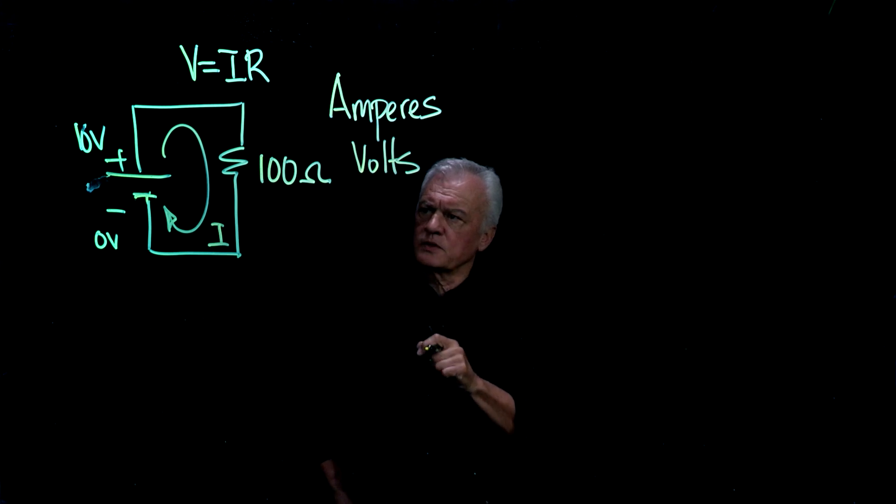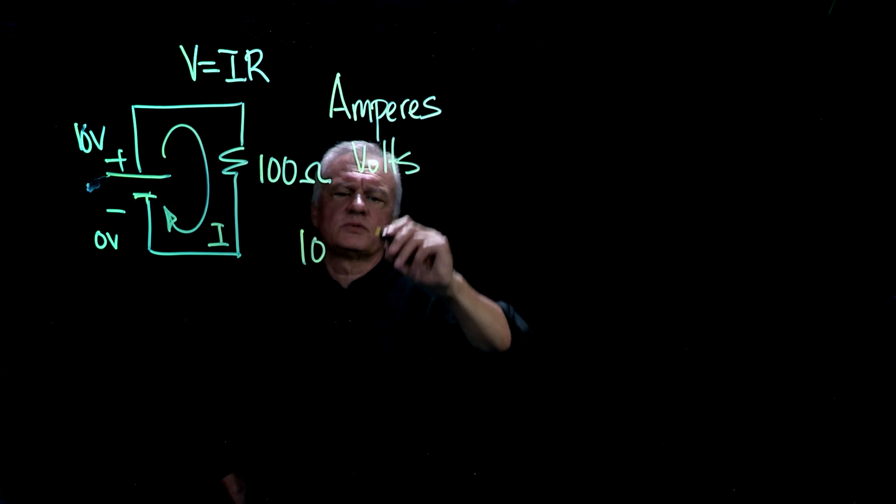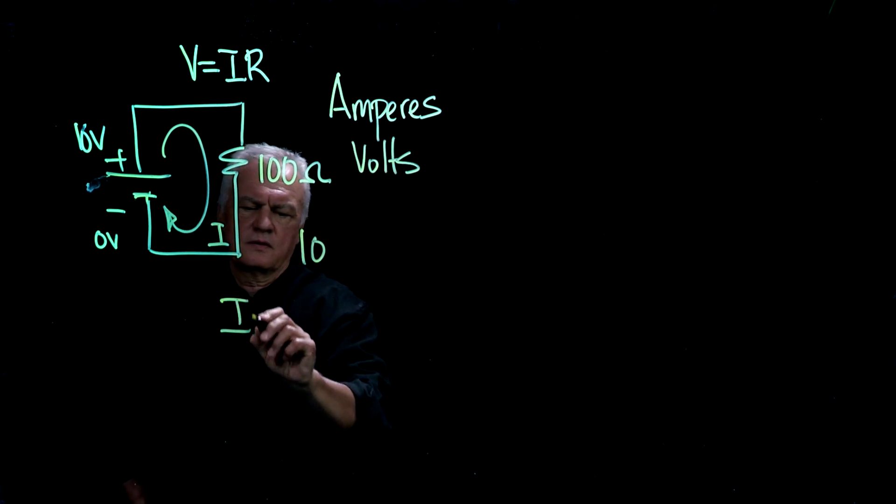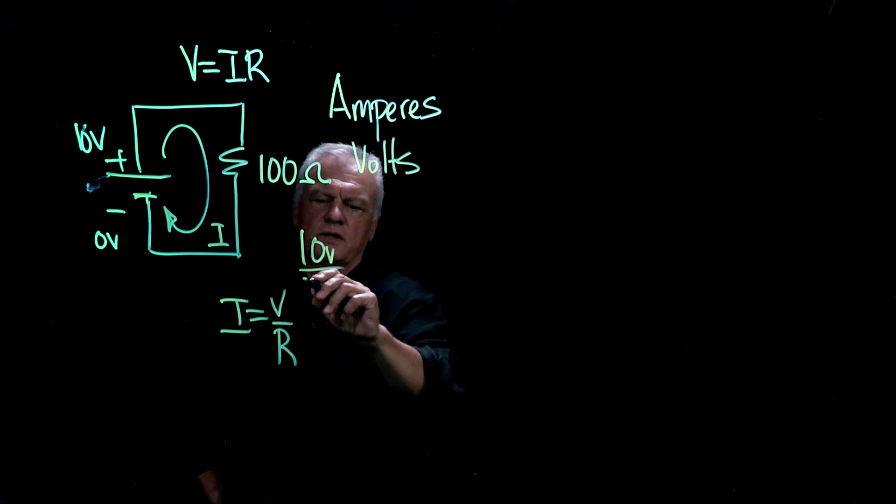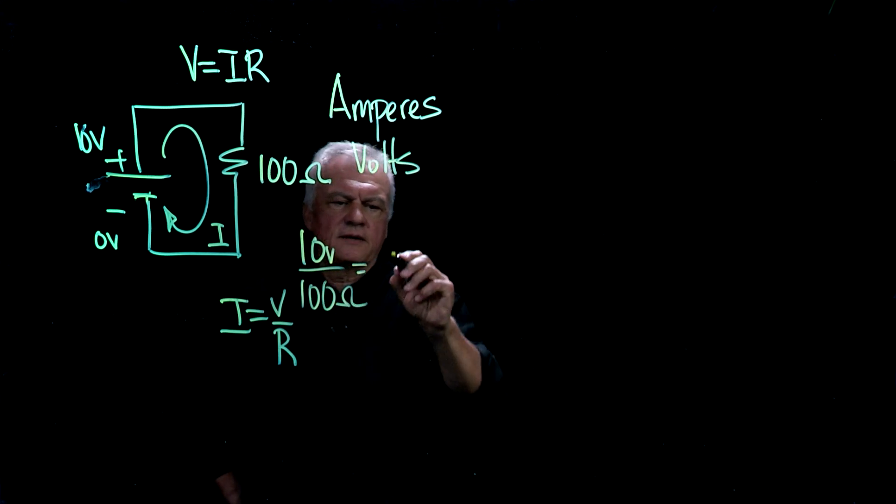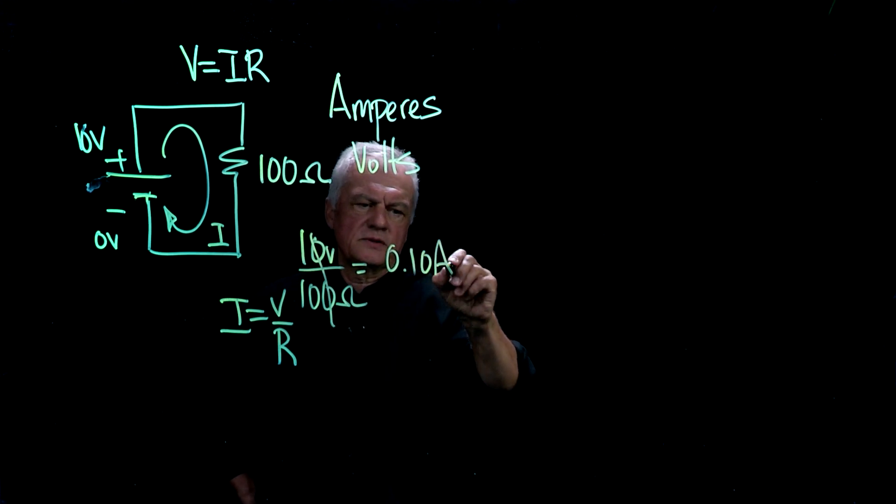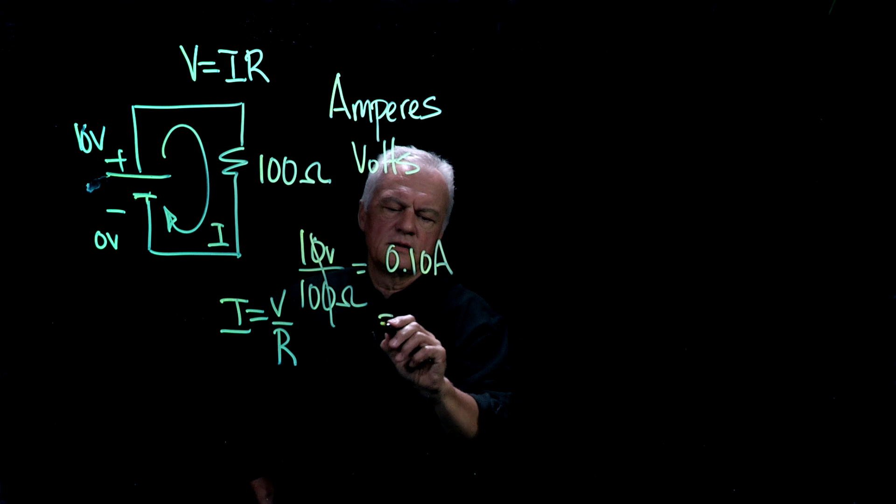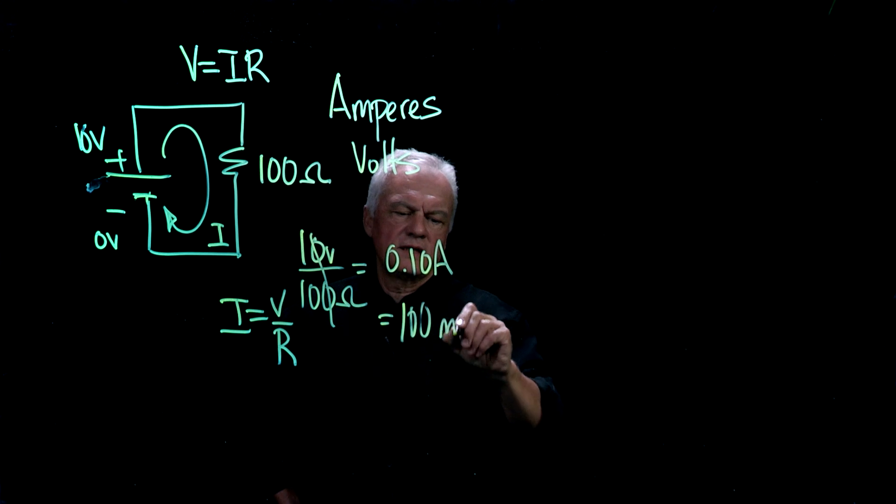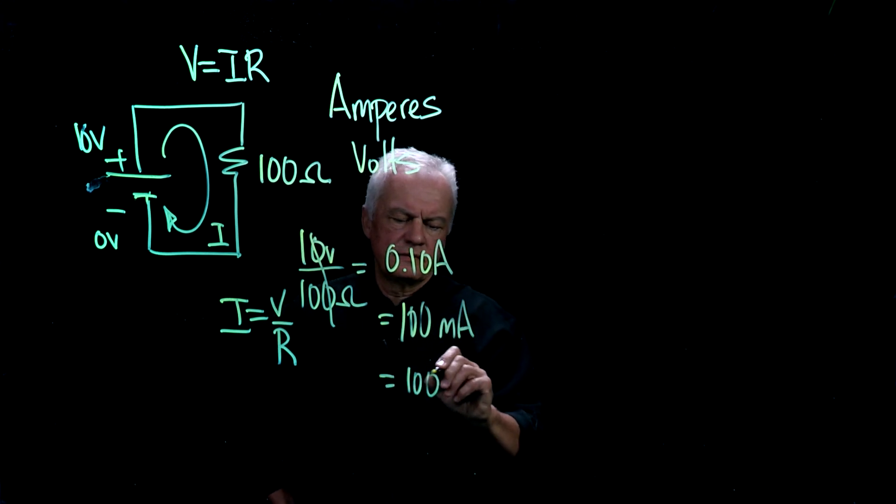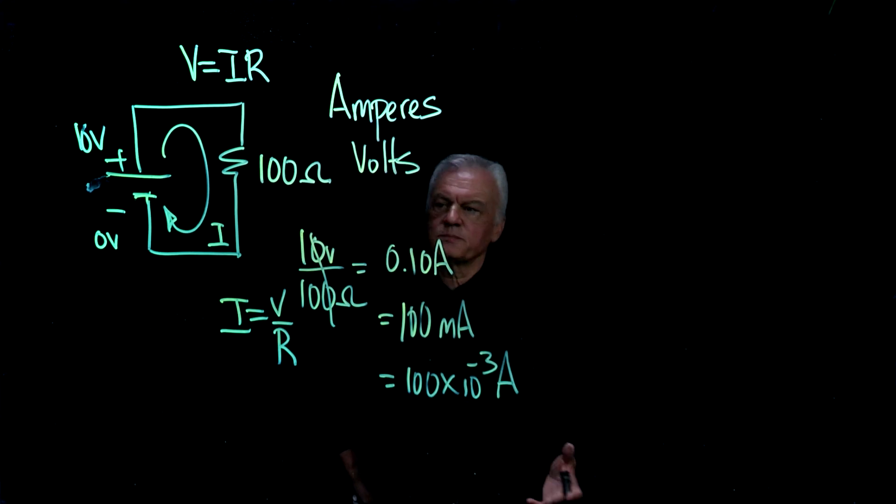Now, so we have a voltage, we have 10 volts, and we have a resistance. So if we rearrange Ohm's law, if we take 10 volts and divide it by 100 ohms, we're going to get 0.1 amps. Or, in engineering dimensions, we like to use powers of three, so this would be milliamps equal to 100 times 10 to the minus three amps. Okay, that's a very simple circuit.